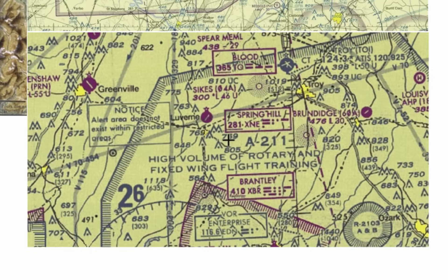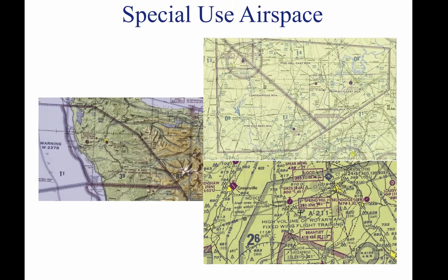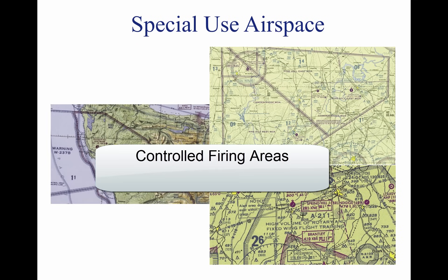Alert areas are designed to inform non-participating pilots of areas that may contain a high volume of pilot training or an unusual type of aerial activity. Controlled firing areas contain activities which, if not conducted in a controlled environment, could be hazardous to non-participating aircraft. These areas do not need to be charted because activities are suspended when aircraft are in the vicinity.